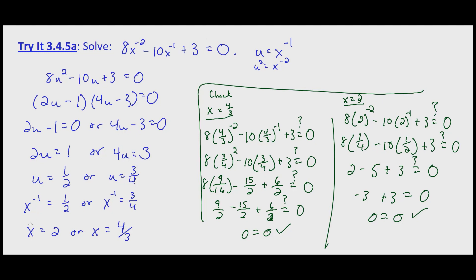So when 8x to the negative 2 minus 10x to the negative 1 plus 3 equals 0, x equals 2, or x equals 4 thirds.